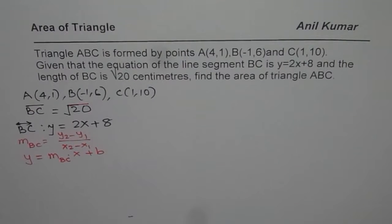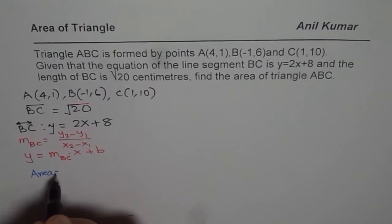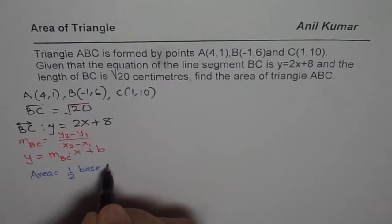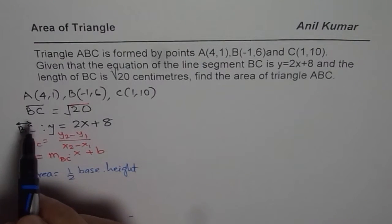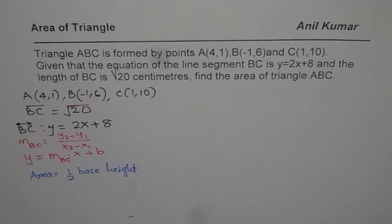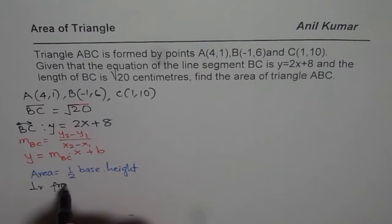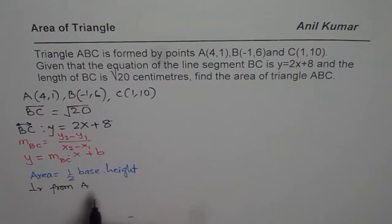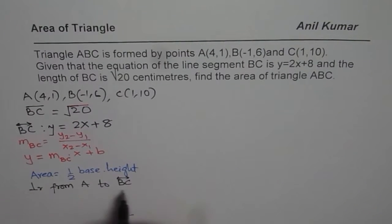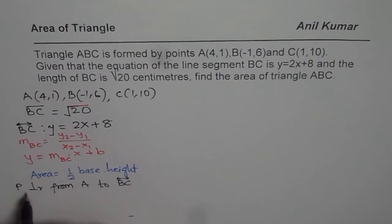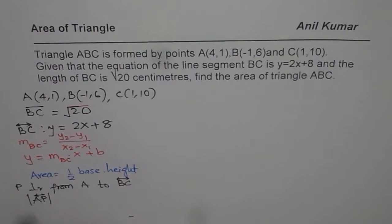Now in a triangle, the formula for area is: Area = ½ × base × height. Since we are given BC, we will consider BC to be the base. If BC is the base, we need to find the height, which means we must drop a perpendicular from A — the vertex opposite to BC — down to the line BC. Let's call the foot of that perpendicular P. We need to find the length of AP, which gives us the height.